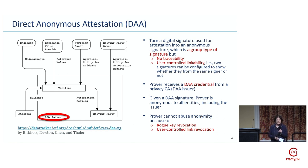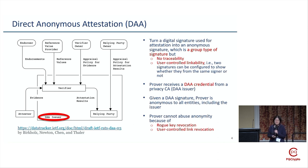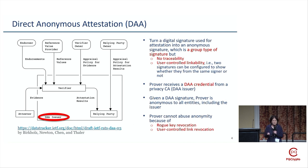Now, ignore all those complicated details. Only think about the digital signature used for attestation. If the attester wants privacy, it wants to turn a traditional digital signature into an anonymous digital signature. Because if your computer is the attester talking to every other computer in the world, your digital signature will link all those attestations — everybody will know where you are, what you do, and what you're trying to prove. That's not good for privacy.